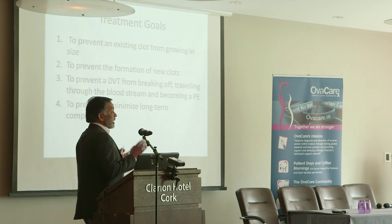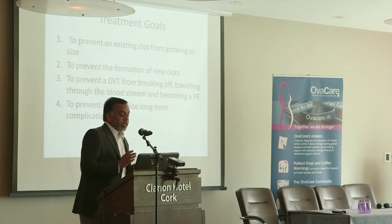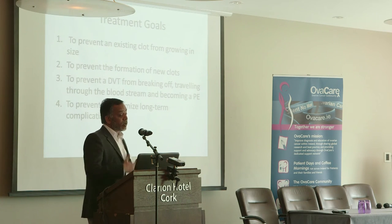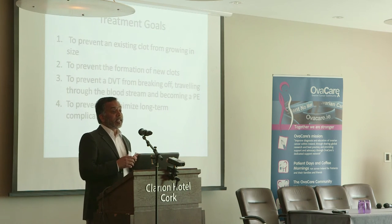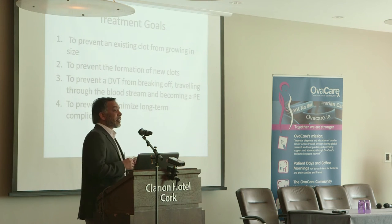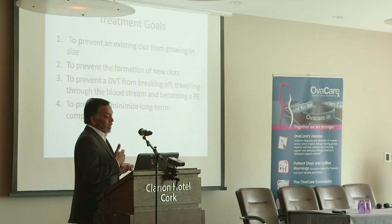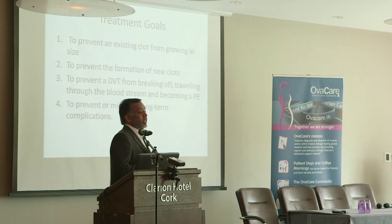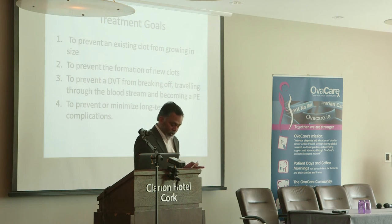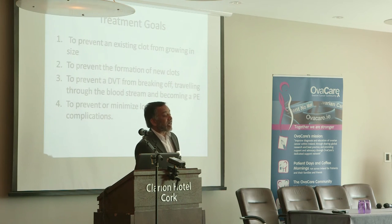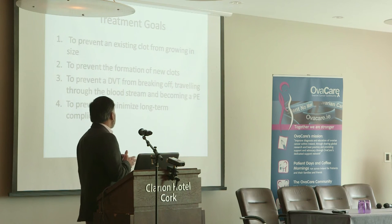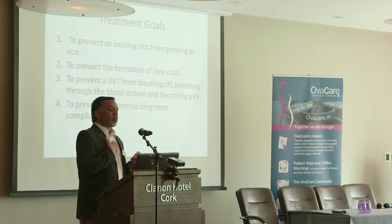If you have developed a clot, our treatment goals are: to make sure the clot is not growing any further, whether in the leg or the lungs; to prevent any new clots forming; to prevent the clot from breaking off from the leg and going to the lungs; and to minimise complications. Complications could include post-thrombotic syndrome if untreated — where the leg will always be swollen, with prominent veins and pain. For pulmonary embolism, even after treatment, four to five percent of people can still develop exertional dyspnoea.